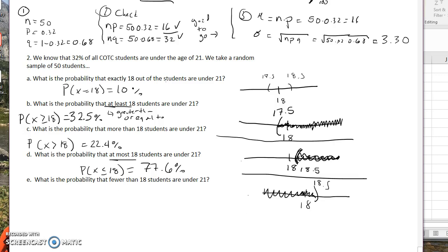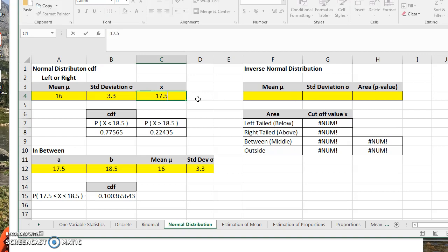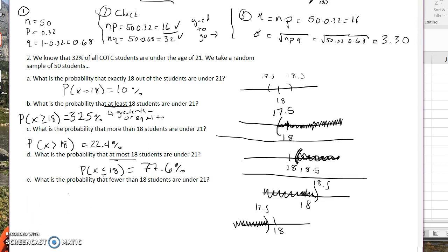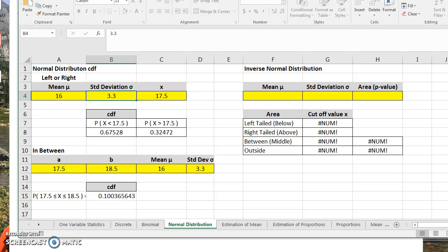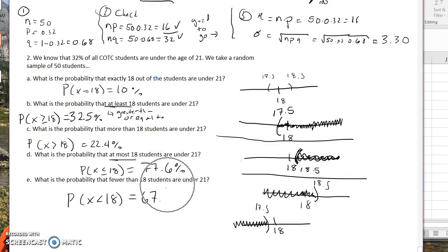Finally our last one, what is the probability that fewer than 18 students are under the age of 21? Fewer than is less than, but it's not going to be equal to. We do not want to include the 18, so we're going to pick 17.5. So we're going to do less than 17.5, and there I see 67.5%. So the probability that X is less than 18 was 67.5%.